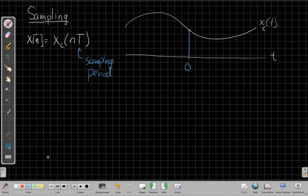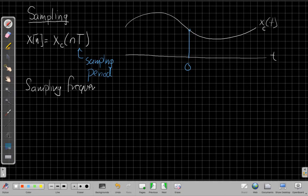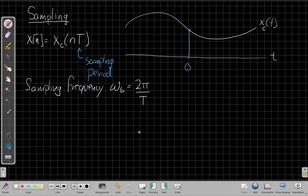We also, related to that, we'll talk about the, in radians, the sampling frequency, which we write as omega sub s is 2 pi over that sampling period capital T. So this is the sampling frequency in radians that we'll see plays an important role in understanding how samples relate to the original signal.